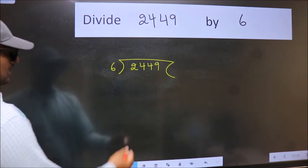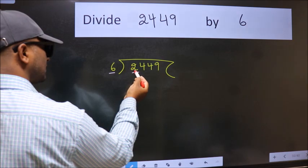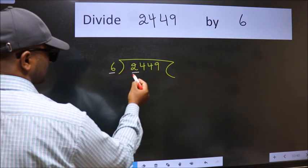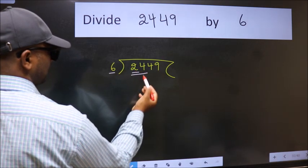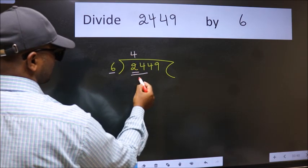Next, here we have 2 and here 6. 2 is smaller than 6, so we should take 2 numbers: 24. When do we get 24 in 6 table? 6 times 4 is 24.